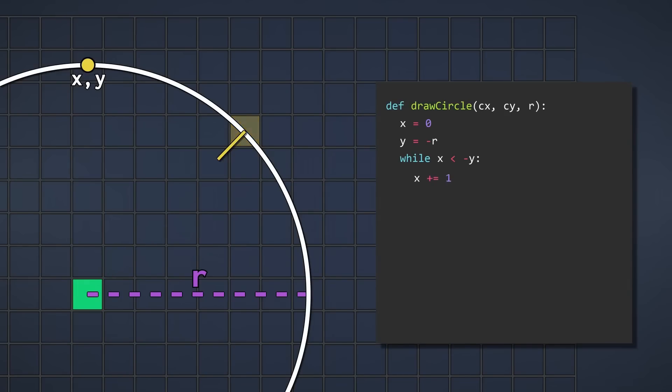And at every iteration, we place a pixel at x, y. Just remember, we need to add Cx and Cy to the X and Y coordinates to draw the circle at the right location, because X and Y are relative to the center of our circle. So far so good, the function now draws a horizontal line.